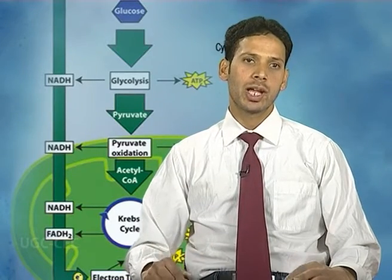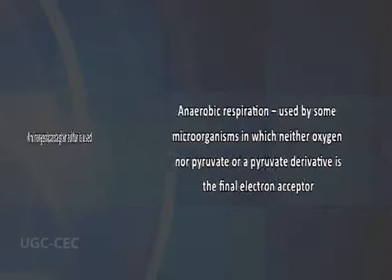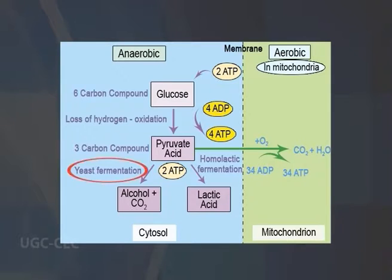Anaerobic respiration is used by some microorganisms in which neither oxygen nor pyruvate or a pyruvate derivative is the final electron acceptor. Rather, an inorganic acceptor such as sulfur is used. Yeast and muscle cells are examples of organisms that can respire anaerobically for a short time.